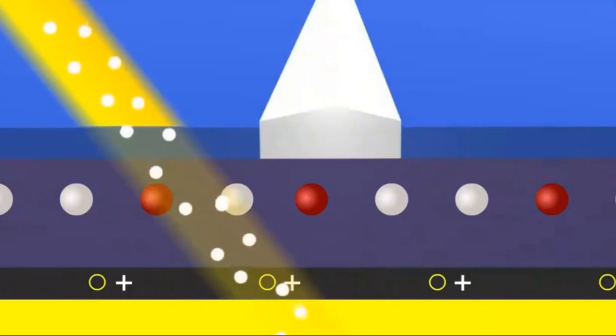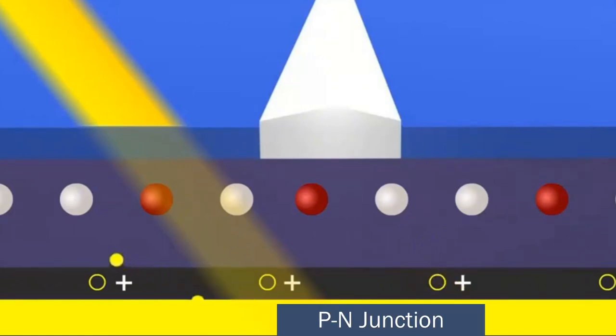This electric field is crucial, as sunlight is composed of photons carrying a significant amount of energy. When sunlight reaches the surface of the solar panel, photons transfer their energy to the electrons in the semiconductor material, making them highly active and breaking free from atomic bonds. These free electrons can move within the semiconductor layers of the panel.